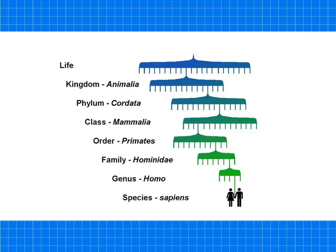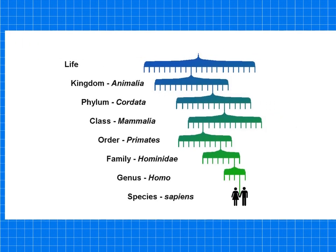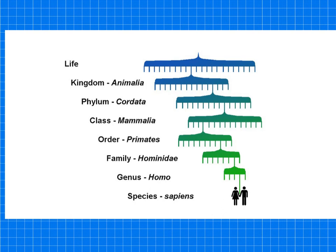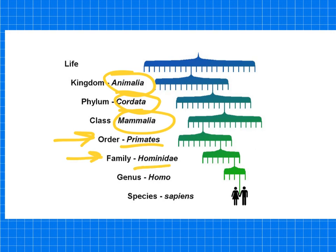As you can see in this diagram, we humans share similarities with the lion — we're both Animalia, Chordata, vertebrates, and Mammalia. But this is where it changes. Our order is Primates, family is Hominidae, genus is Homo, and our species is sapiens. So we are known as Homo sapiens.